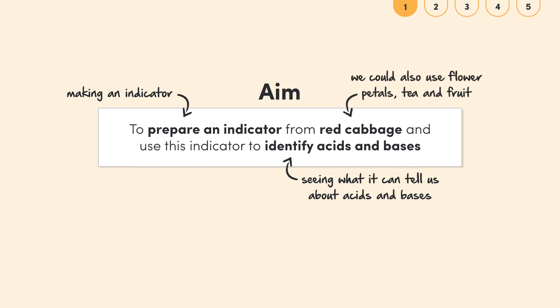There are many things we could make our indicator from, like flower petals, tea and fruit, but we're going to be using red cabbage.